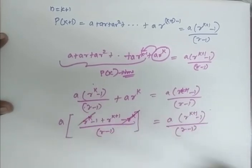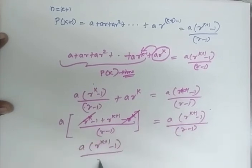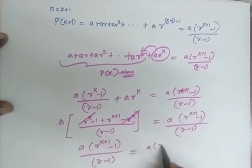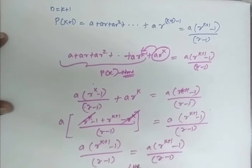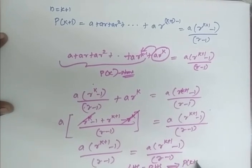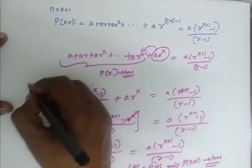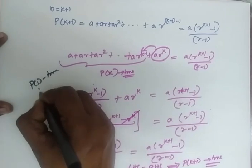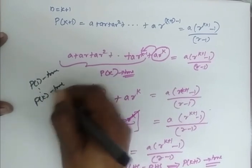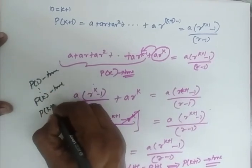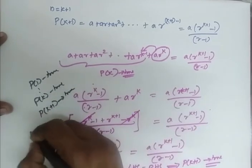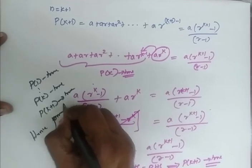The terms cancel, so I have a into r power k plus 1 minus 1 by r minus 1, which equals a into r power k plus 1 minus 1 by r minus 1. My LHS equals RHS, which implies that P of K plus 1 is true. So what I have proved is: P of 1 is true, P of K is true, and P of K plus 1 is true. Hence, it has been proved for all n.